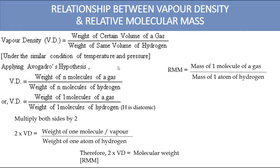Under similar conditions of temperature and pressure, by applying Avogadro's hypothesis, vapor density equals the weight of N molecules of the gas divided by weight of N molecules of hydrogen. This N can be 1, so vapor density equals weight of one molecule of the gas divided by weight of one molecule of hydrogen. Since hydrogen is diatomic, one molecule of hydrogen contains 2 atoms of hydrogen.